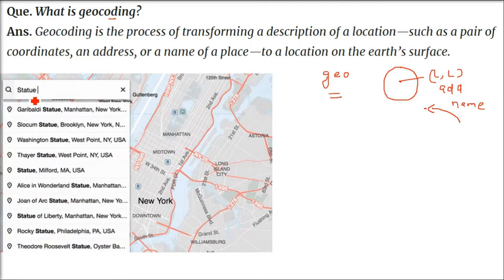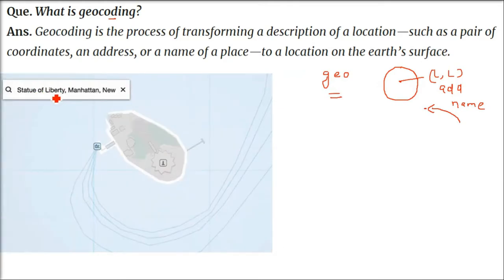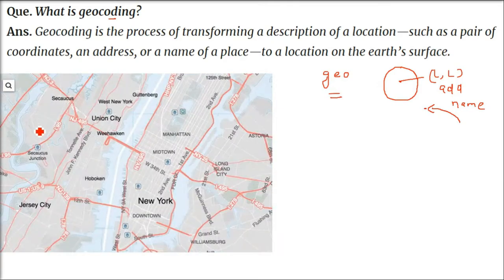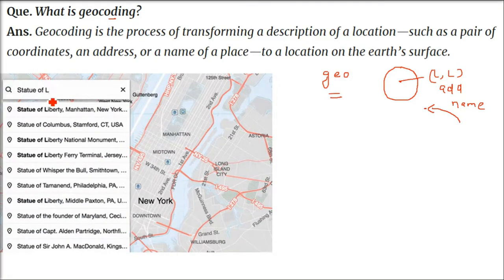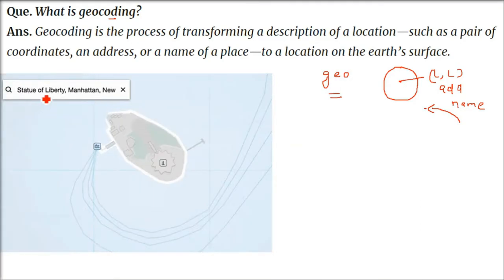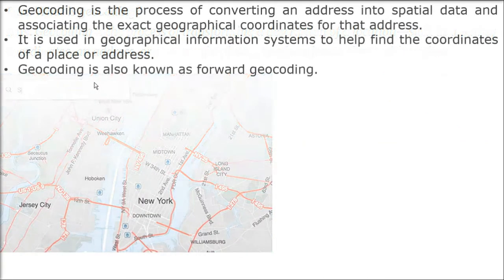You can see an example here. This is a map, and you are placing or putting some name — and as soon as you enter the name, it takes you to a proper spatial location. It identifies that this is the location we are talking about.